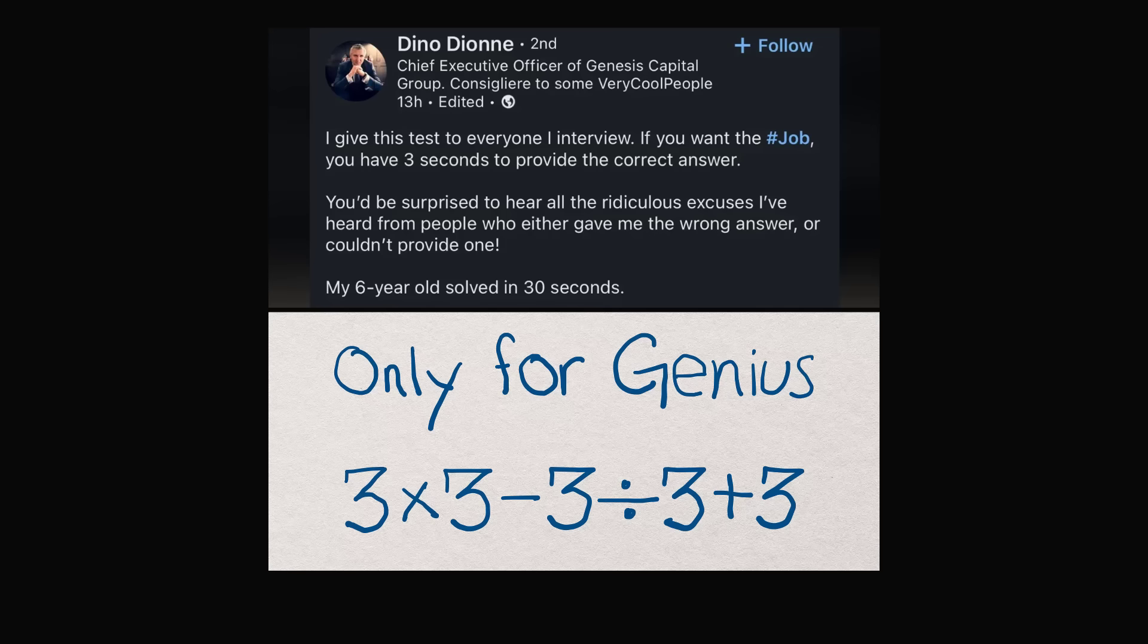So I wanted to share some of the other responses. Some people evaluated this expression strictly going from left to right. So we start out with 3 times 3, this is equal to 9. Then we do the next operation from left to right, which will be 9 minus 3. This evaluates to 6.